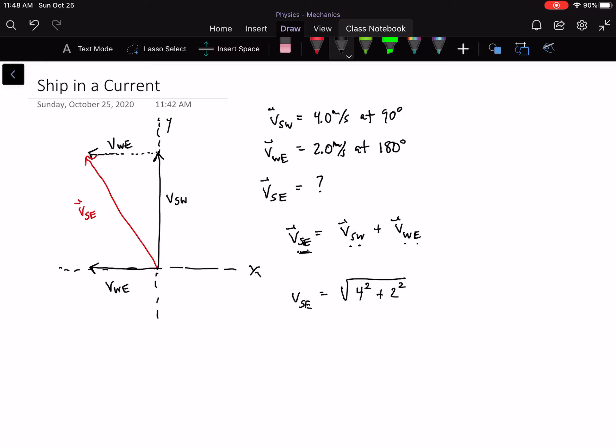It'll be negative, but when we square it, it doesn't matter. We'll get the square root of 20, which is about 4.5 meters per second at how many degrees?